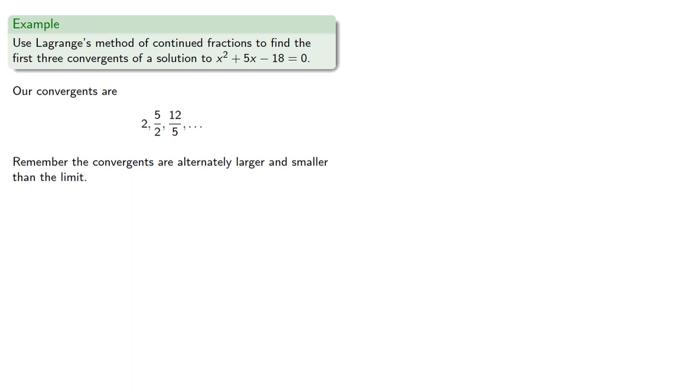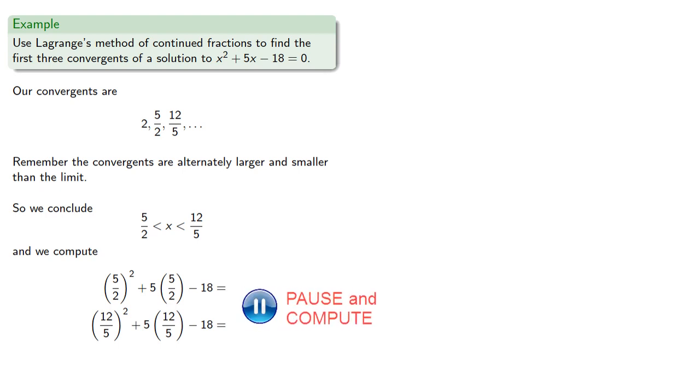Now remember, the convergents are alternately larger and smaller than the limit, so we conclude that our solution is someplace between 5 halves and 12 fifths, and in fact if we compute our polynomial at these two points we find the root is between these two values.